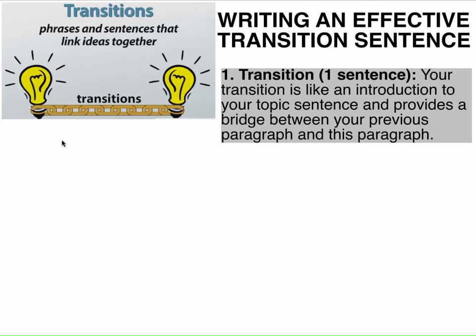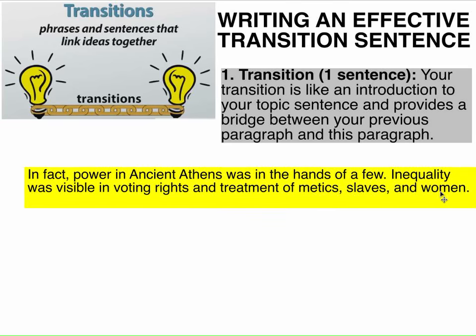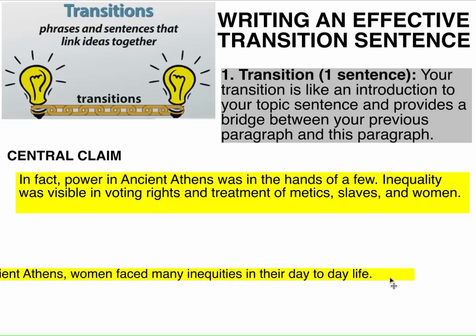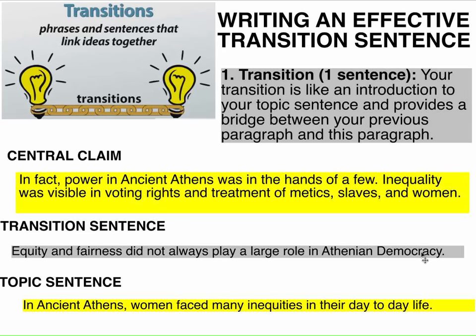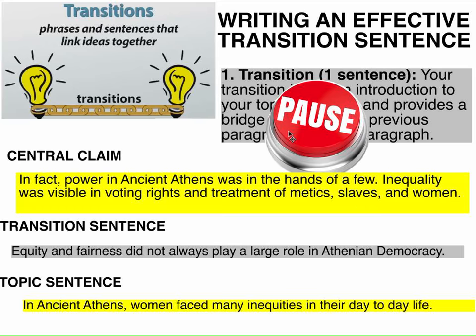Now I'm going to write my transition. In my transition, I need to link my central claim to my topic sentence. My transition needs to somehow link the fact that there was inequality in voting rights and the treatment of women, medics, and slaves, to my topic sentence where I talk about how women faced many inequities. This is what I wrote: 'Equity and fairness did not always play a large role in Athenian democracy.' This really easily transitions me from talking about my central claim to talking about this first topic sentence. Pause and write out your transition sentence, making sure it transitions you from your central claim to your topic sentence.